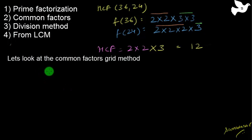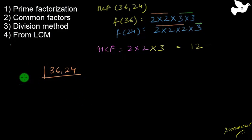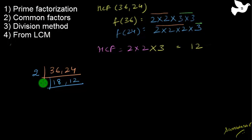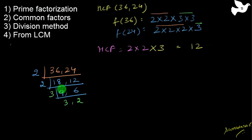Now, I have 36 and 24. Like for LCM, you take any prime number which divides both numbers. I will have 2: 36 ÷ 2 = 18 and 24 ÷ 2 = 12. Again with 2: 18 ÷ 2 = 9 and 12 ÷ 2 = 6. Since 2 doesn't divide both remaining numbers, I divide by 3: 9 ÷ 3 = 3 and 6 ÷ 3 = 2. I cannot find any other number which divides both of these.